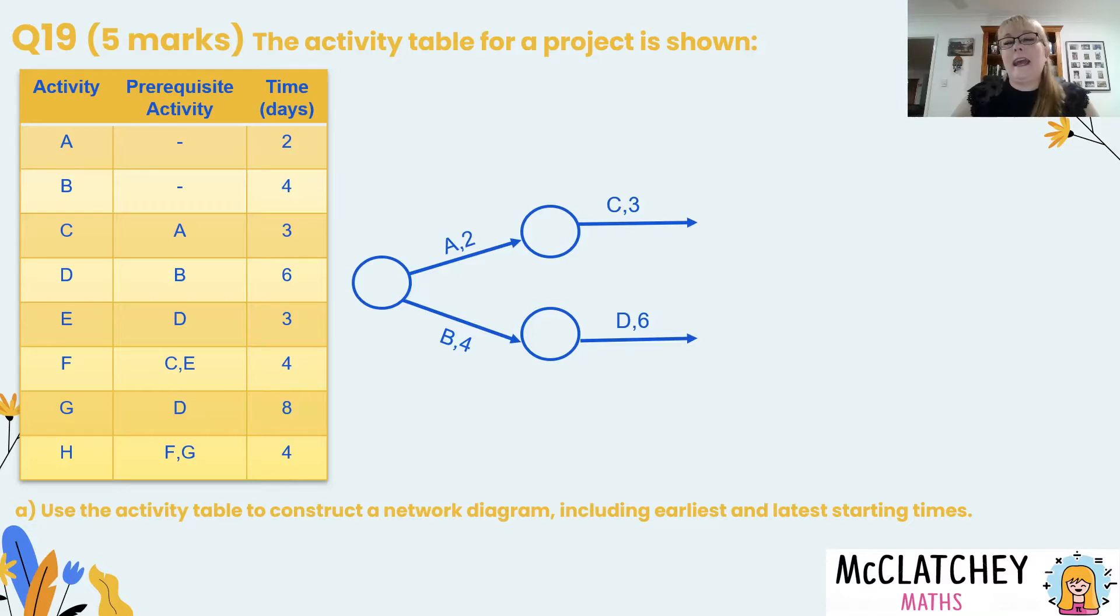We need to end activity C and D with a vertex but what we're going to do here is move activity E up towards C. Now sometimes when you're drawing these you might be drawing them in a linear way and then as you get through the project you realize you need to actually diverge here. What I can see is going to happen if I look ahead in my activity table is that activity F is going to come out of C and E. Well I've already drawn C so I'm going to bring E up towards it so that I can branch F out from there. F is four days in duration.